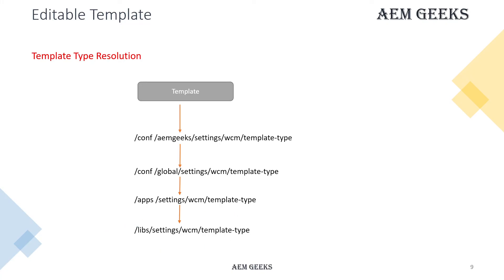Template types are resolved based on relative path. Your folder structure must contain the path settings/wcm — you can have anything before that, but this relative path must be present. If it is not there, your template type won't be resolved, so when creating your own folder this path is required.